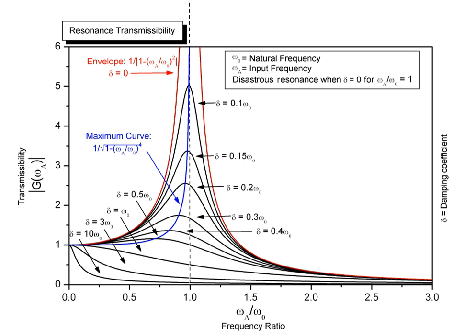Acoustic resonance is a branch of mechanical resonance that is concerned with the mechanical vibrations across the frequency range of human hearing, in other words sound. For humans, hearing is normally limited to frequencies between about 20 Hz and 20,000 Hz. Many objects and materials act as resonators with resonant frequencies within this range, and when struck vibrate mechanically, pushing on the surrounding air to create sound waves. This is the source of many percussive sounds we hear.